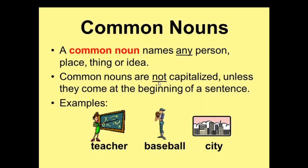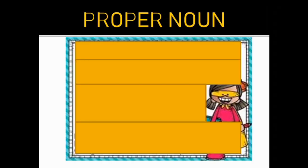Here are the examples of common nouns: teacher, baseball, city. Common nouns are the names of any person, place, thing, or idea, and they are not capitalized. Now let's see another type of noun — in comparison to the common noun, there is the proper noun.